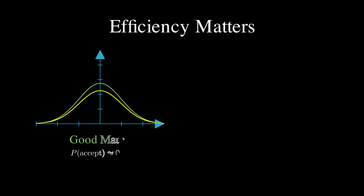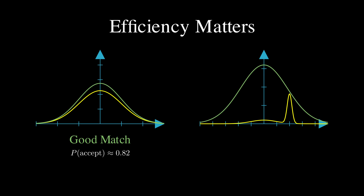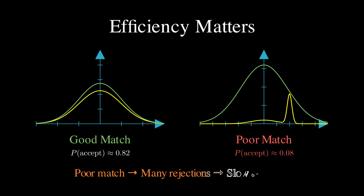The efficiency of accept-reject sampling depends critically on how well your proposal matches your target. If g closely matches the shape of f, then m can be small and most of your samples get accepted, making the algorithm fast and efficient. But if g is a poor match — like trying to use a simple normal distribution for something with a sharp spike or heavy tail — then m needs to be huge to cover everything, your acceptance rate plummets to near zero, and you'll spend forever rejecting samples and waiting for accepts.